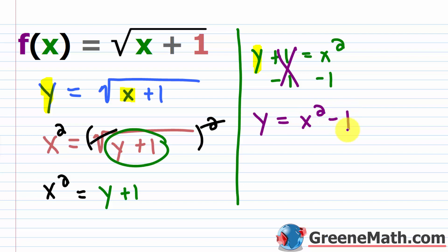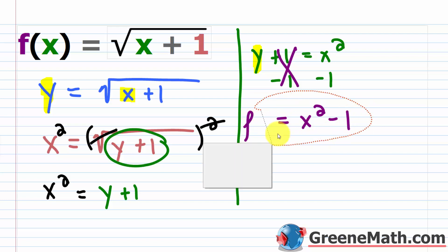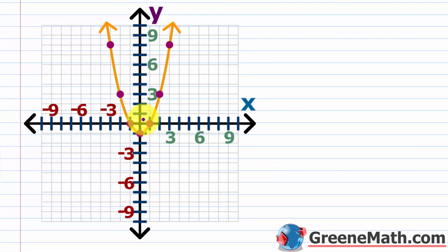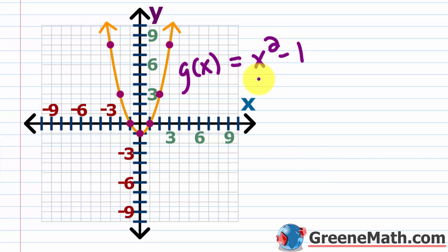In most cases, we would stop and say this is the inverse — f inverse of x equals x squared minus one. But you'd scratch your head and say, that can't be right, because g of x equals x squared minus one is not a one-to-one function. If you had g of x equals x squared shifted down one unit, that graph would fail the horizontal line test like crazy — many horizontal lines would cross it multiple times.